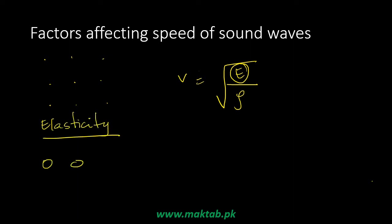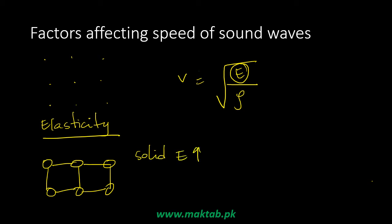Elasticity refers to how elastic the chemical bonds between particles are. In solids, the modulus of elasticity is high but the bonds are less elastic — when one particle moves, the adjacent particles also move, so energy transfers efficiently. In gases, bonds are more elastic; when one particle moves, the other may remain because the bond stretches, so energy transfer is less efficient. In solids, sound transfers more rapidly.